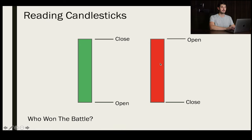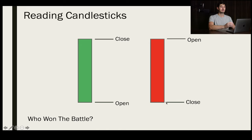With the red candle, it's the complete opposite — it opens at the top of the body. Let's say it's opening at $4 and closes all the way down at $3.50, because price actually went down during that time frame from $4 to $3.50. That's what makes it a red bar. So just remember: if it's a green bar, price opened at the bottom and closed at the top; if it's a red bar, it opened at the top and closed at the bottom.